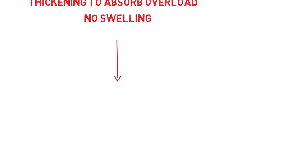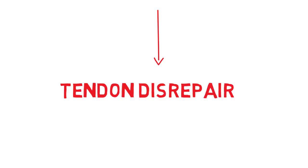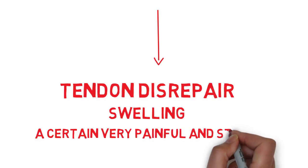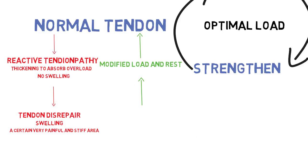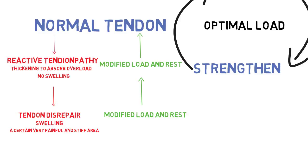The next stage is tendon disrepair. This is when the tendon has attempted to heal but hasn't managed to. There's going to be swelling, and these tendons often have one particular area or point that is predominantly stiff and painful. This is what people consider to be a tendonitis, while the reactive tendinopathy — the first stage — is what people consider to be a tendinosis. Once the load has been modified, you unload the tendon, give some time to rest, and start progressively going back into your activity — and it's fine.